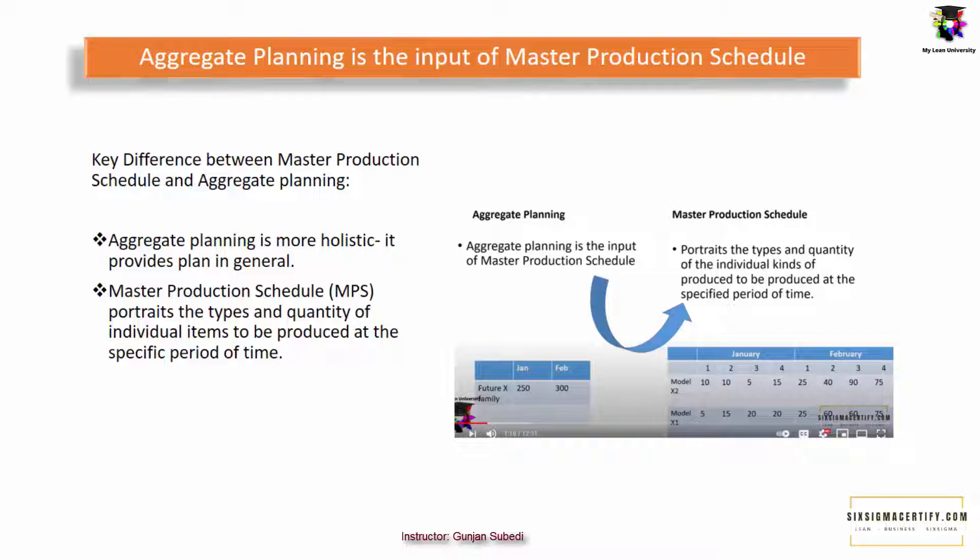The difference between the two is that aggregate planning is more holistic, while the master production schedule portrays the type and quantity of individual items to be produced at a specific period of time.